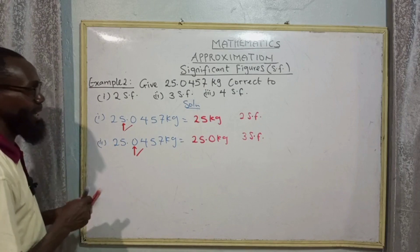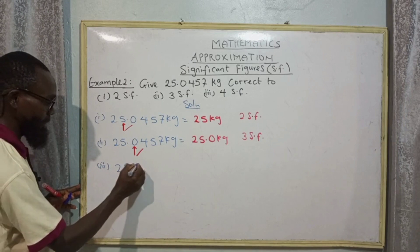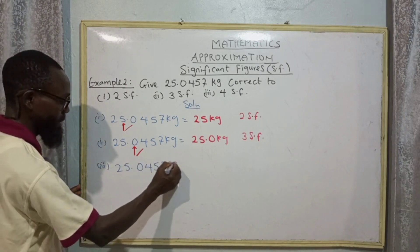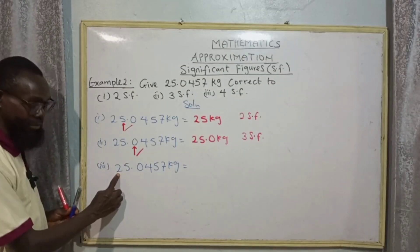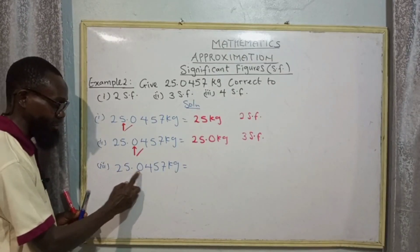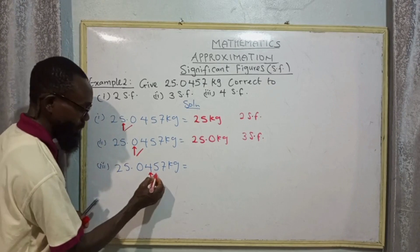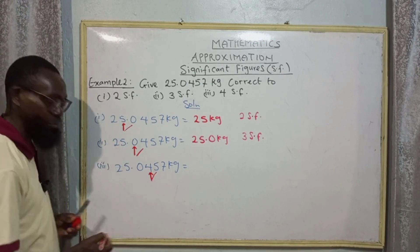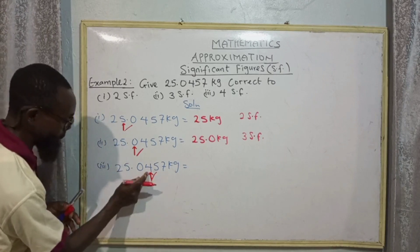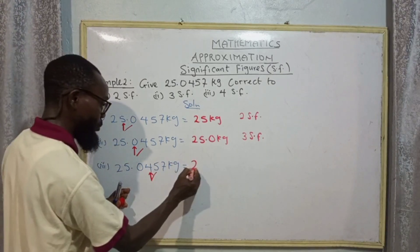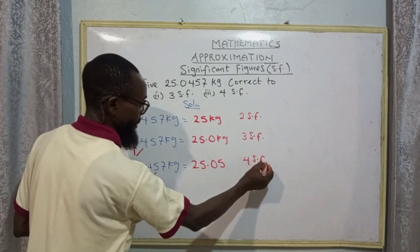For four significant figures in 25.0457: the first SF is two, second is five, third is zero, and the fourth is four. Check to the right — we have five. Five is between five to nine, round up to one, add the one to four making five. Therefore we have 25.05 kilograms — that is four significant figures.